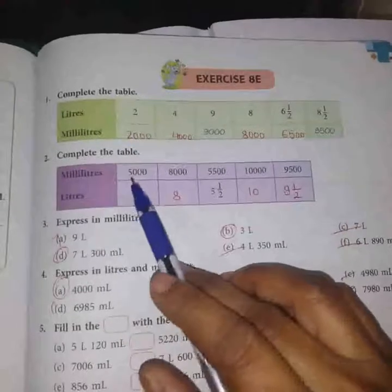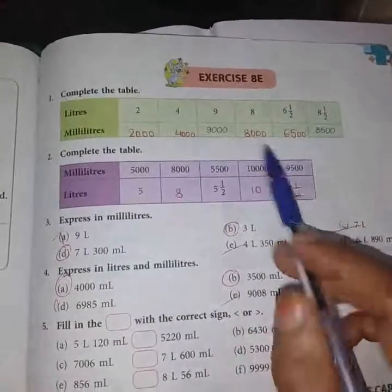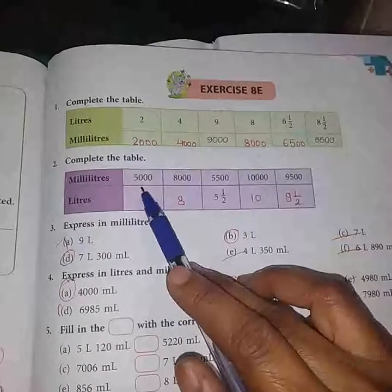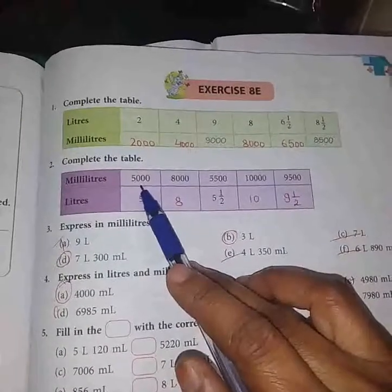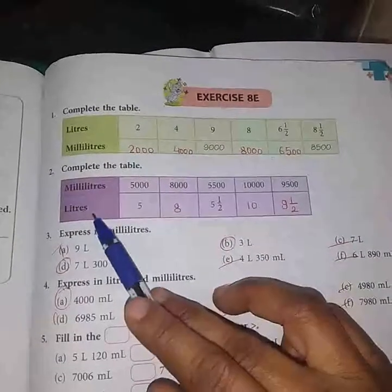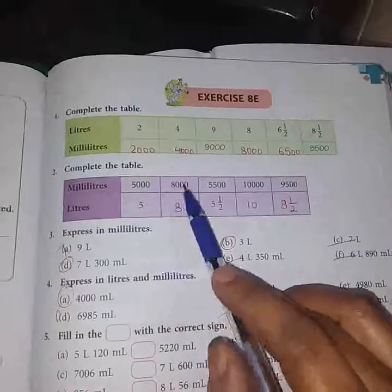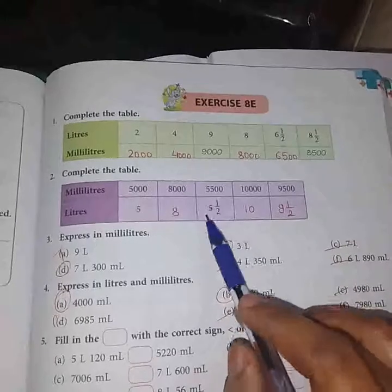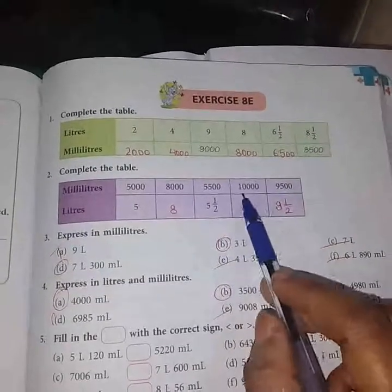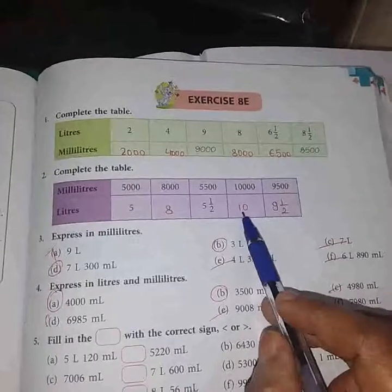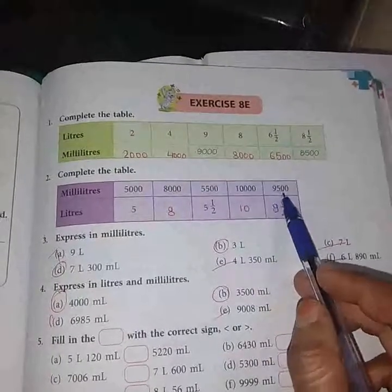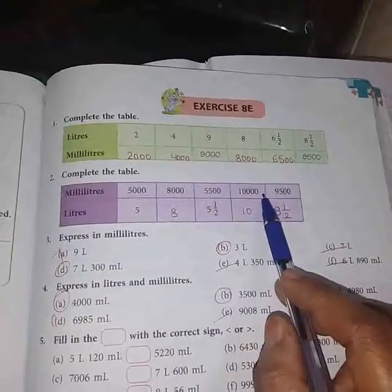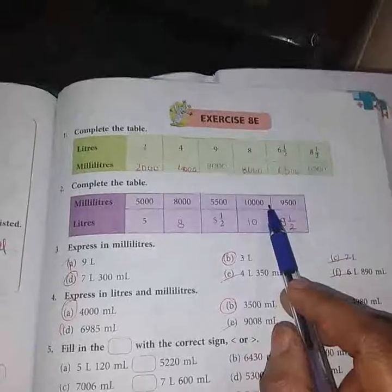Here in question number 2, again a table is given. Now the measurement is given in milliliters and we have to convert it into liters, so we have to divide by thousands. 5000 when converted into liters will be 5 liters, 8000 equals 8, 5500 equals 5 and a half, 10,000 ml equals 10 liters, and 9500 equals 9 and a half liters. What we did here, we divided the numbers by 1000 only.